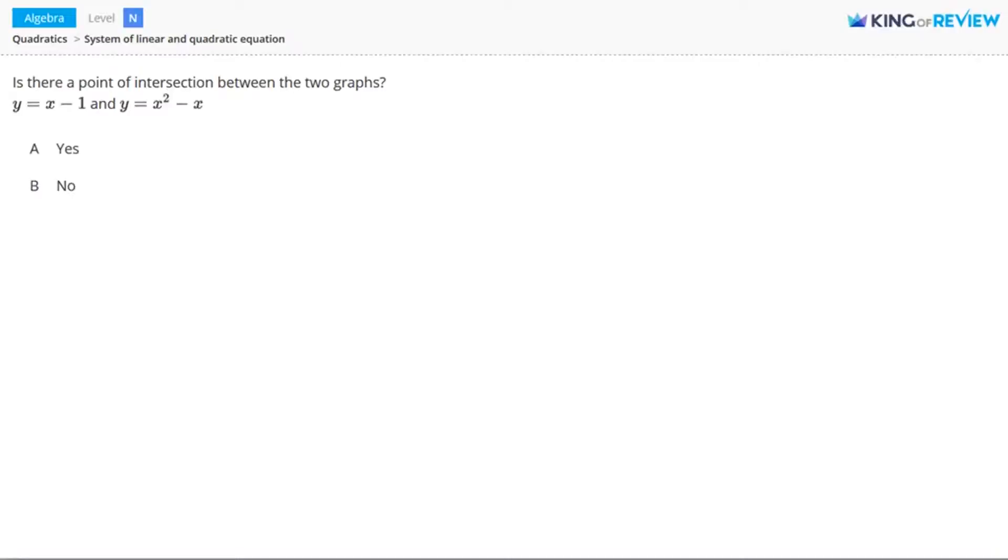Hi, this is King of Review. Is there a point of intersection between the two graphs, y equals x minus 1 and y equals x squared minus x?